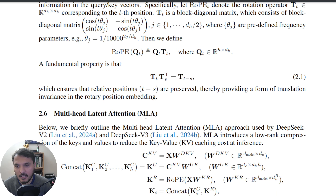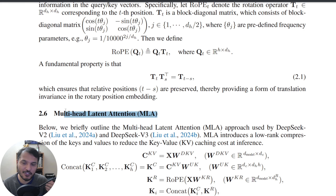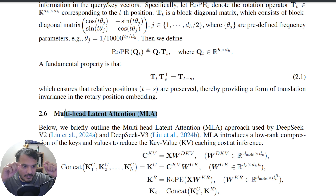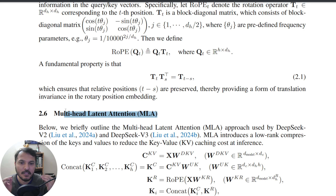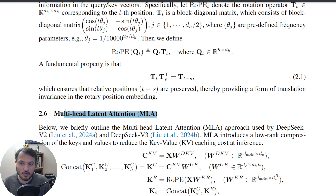Latent attention was introduced in DeepSeek papers: instead of acting directly on the hidden dimension, you generate an internal latent representation and then generate keys and values from it — same for queries. This latent representation is low-rank, so KV cache usage is low, giving inference-time advantages.